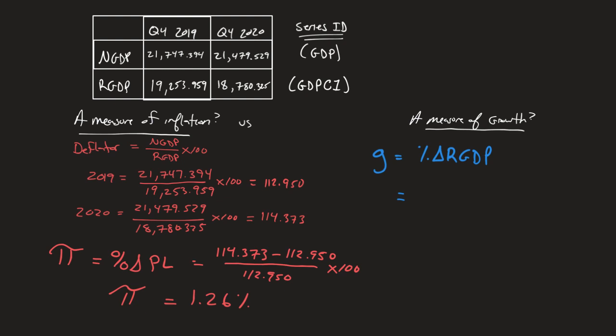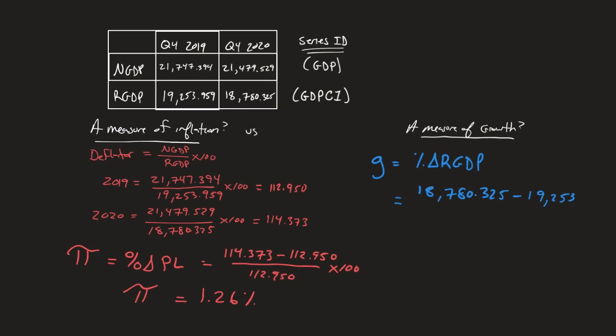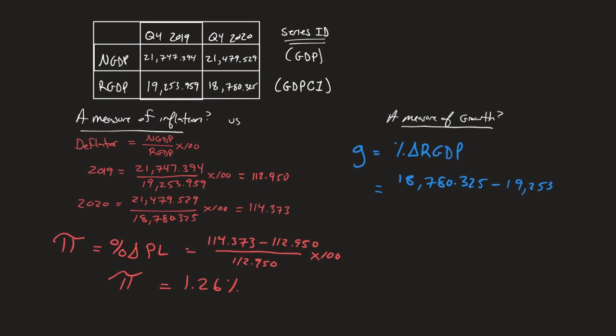Which is 18,780.325. Again, a reminder, these are in millions. So that means 18.7 trillion. Subtract that by the old value, which was 19,253.959, divided by the old value of 19,253.959 times that by 100. We're going to plug this into my calculator. And we will get the growth rate for this year, which was the year over year change of real GDP at negative 2.49%.